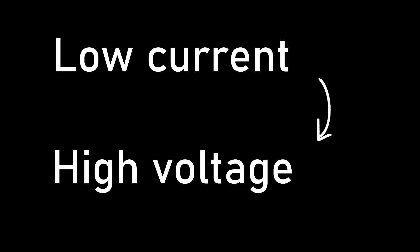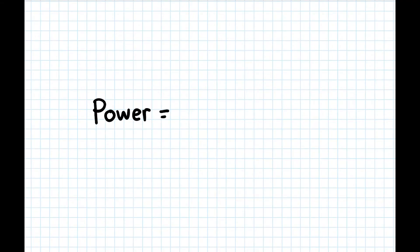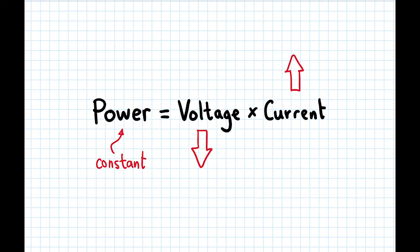If we want a low current, that means we want a high voltage according to this equation. Power is voltage times current. For a constant power, voltage is inversely proportional to current.